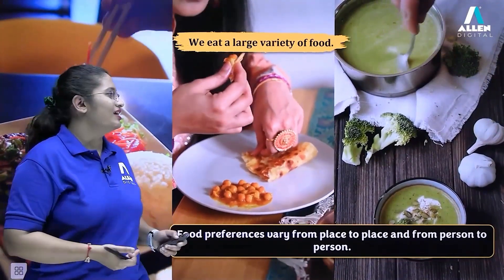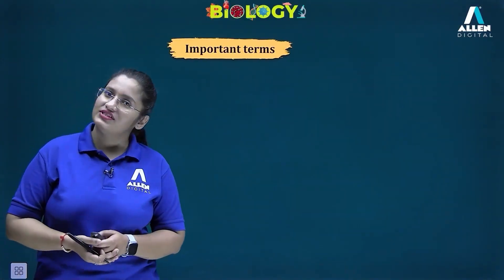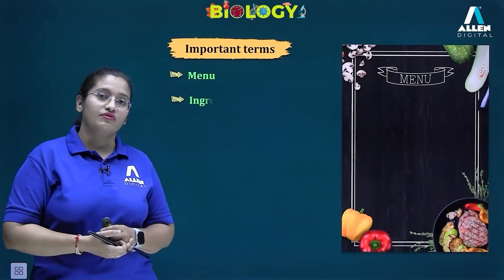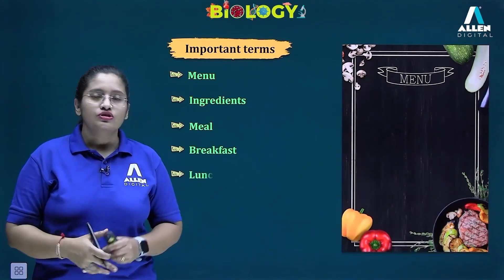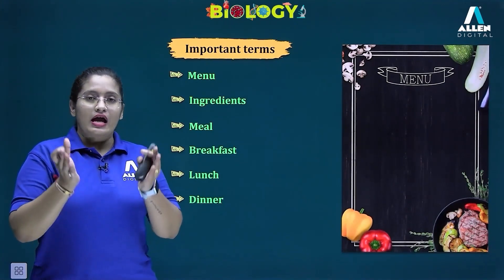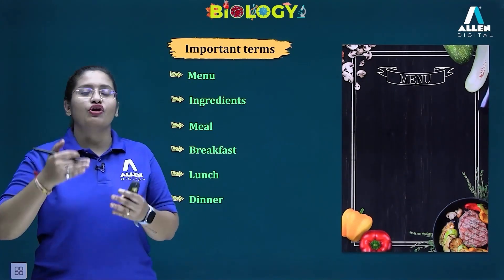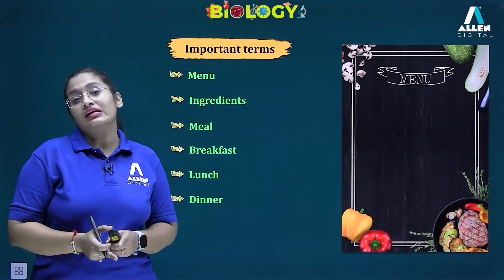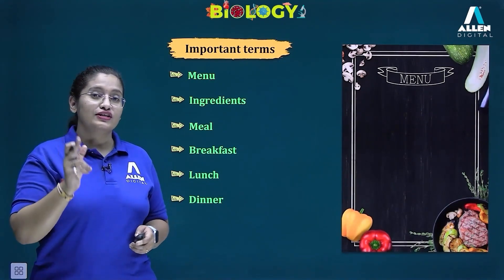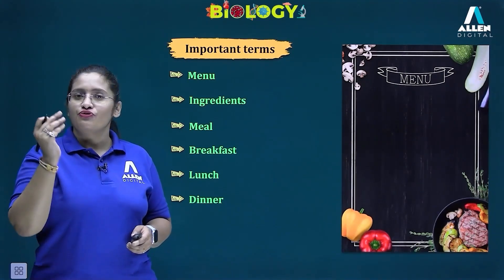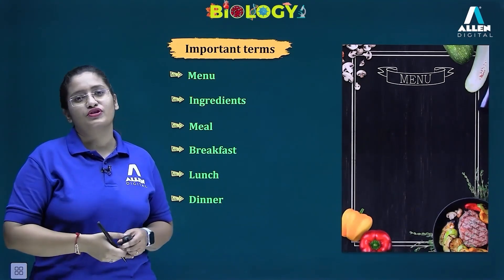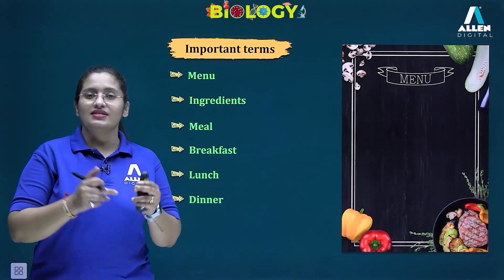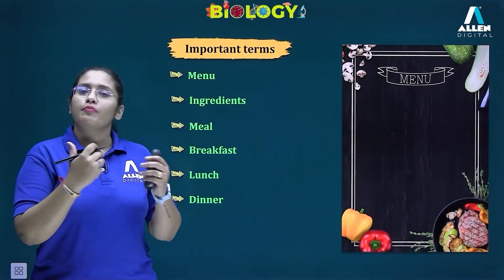Now we are going to talk about some terms related to food. The first term is 'menu'. When you go to a restaurant, the restaurant has its own list of different dishes being served there. That list which contains the names of all the different dishes served at that place is referred to as a menu.